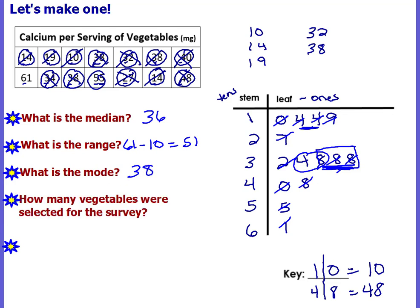How many vegetables were selected for the survey? That means how many data pieces are there? All you have to do is count the number of leaves: one, two, three, four, five, six, seven, eight, nine, ten, eleven, twelve, thirteen, fourteen. There were fourteen vegetables selected for the survey.